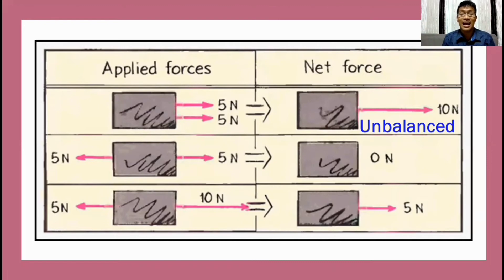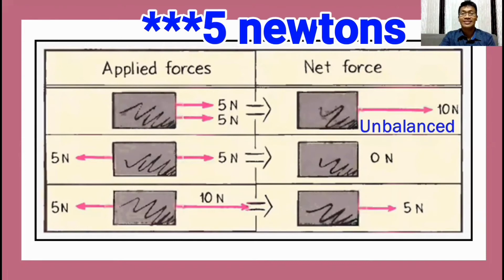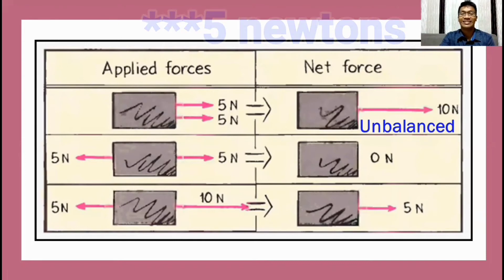Therefore, the net force as the person on the right side and as the person on the left side exert this five newton each would be zero. So they will cancel out the force exerted by each other because it is equal. Therefore, this object will not move. So it is balanced or at state of equilibrium.